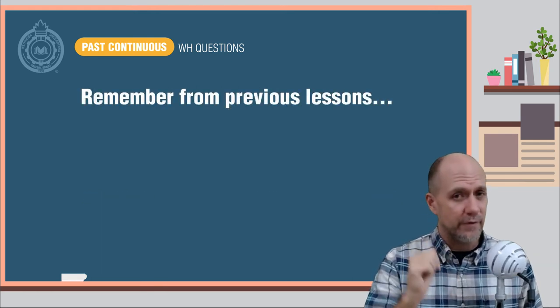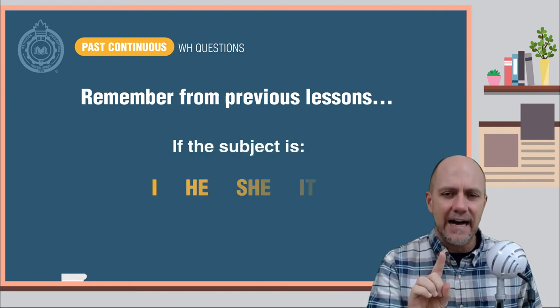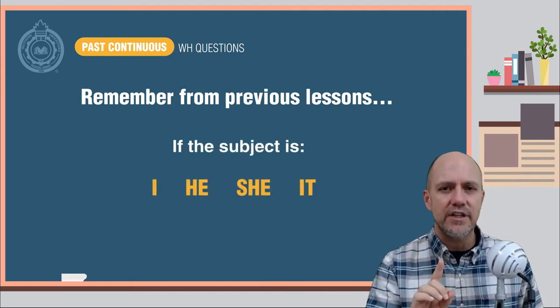Remember from the previous lessons, if the subject is I, he, she, or it, the verb be changes to was in the past tense.